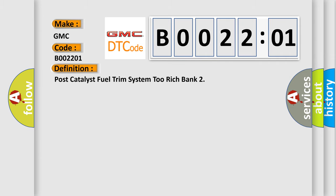The basic definition is: post-catalyst fuel trim system to rich bank. And now this is a short description of this DTC code: Poor drivability. This diagnostic error occurs most often in these cases.